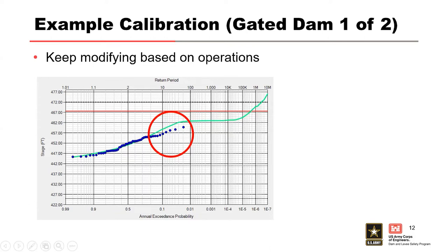The results of iterating on the stage discharge rating curve can be seen in the expected curve, which uses the recommended emergency release guide curve varying from 4,000 CFS at 462.5 feet. Now we're getting close to matching the observed events. What we can tell from this plot is that above elevation 455, the discharges from the guide curve appear to be too low, resulting in peak stages that are higher than the observed events — meaning we're not releasing enough water at those elevations.